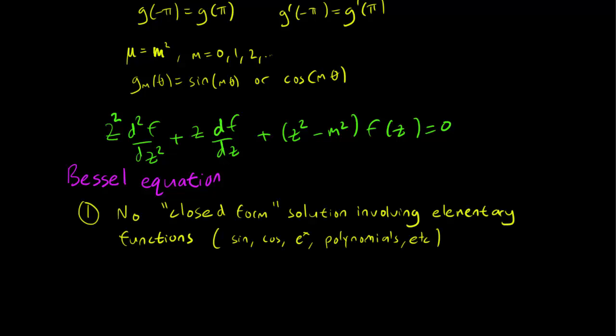Firstly, the Bessel equation has no closed-form solutions that involve elementary functions, so you cannot write the solution in terms of sine, cosine, exponential, polynomials, etc. So the solutions are so complicated that it's really difficult to even write them down.